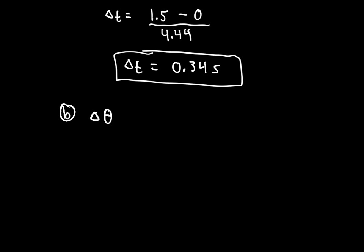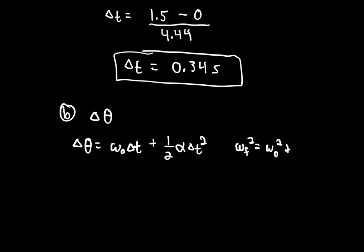We have two kinematic equations we could use: change in theta equals omega-naught times delta-t plus one-half alpha times delta-t squared, or omega-final squared equals omega-initial squared plus two times alpha times delta-theta. Both are valid — the first one is easier because it directly gives theta.